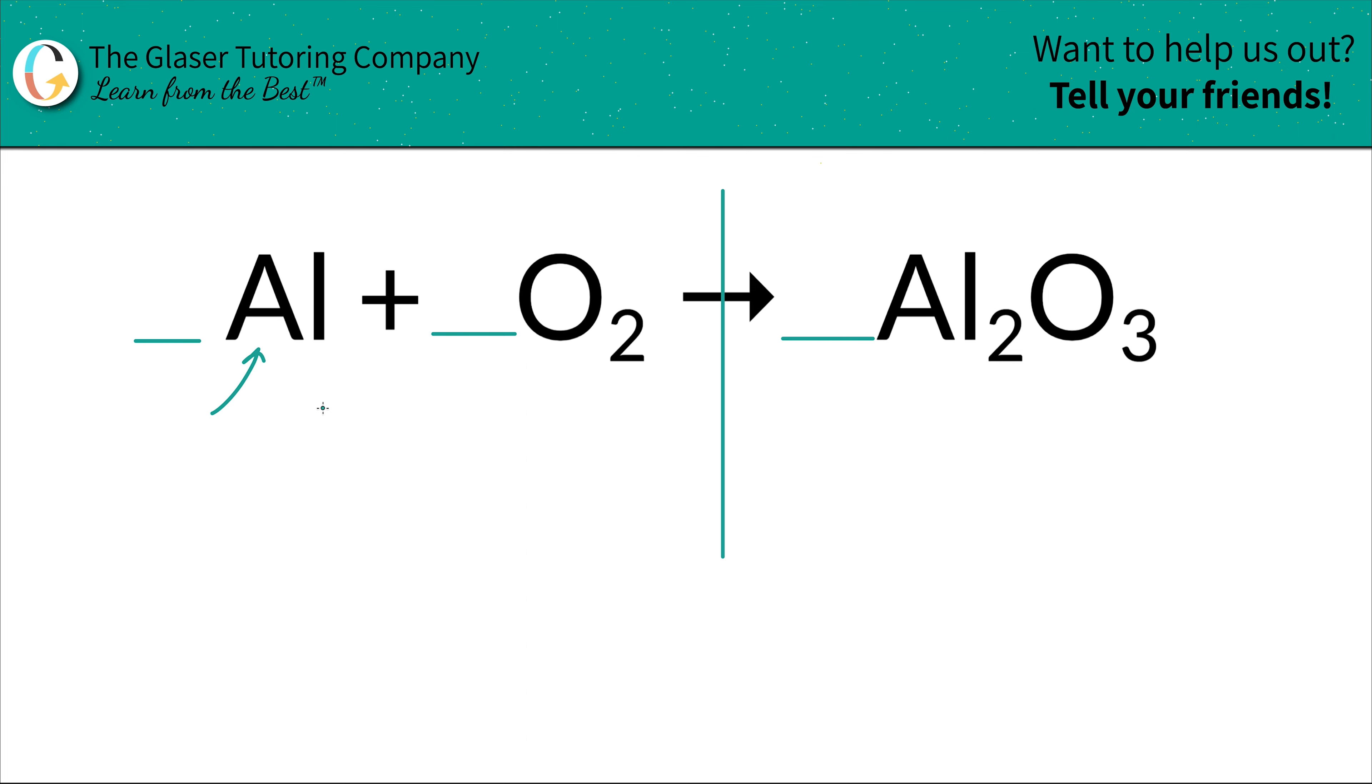Then work with the first element you see. I see aluminum. I have one aluminum on the left, and I have two aluminums on the right. Remember the subscript of that element will tell you the number of atoms of that element.